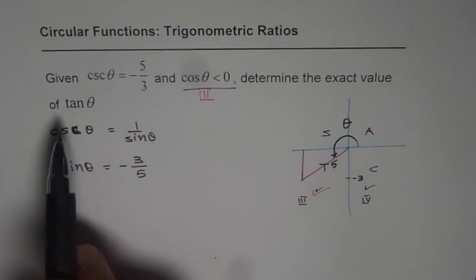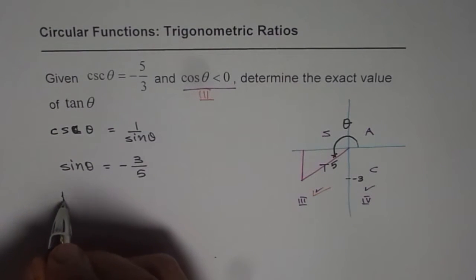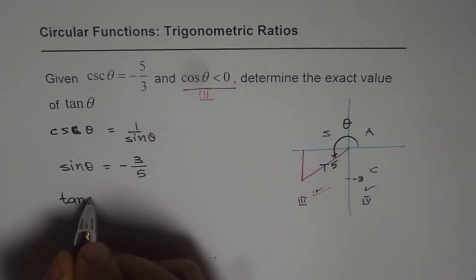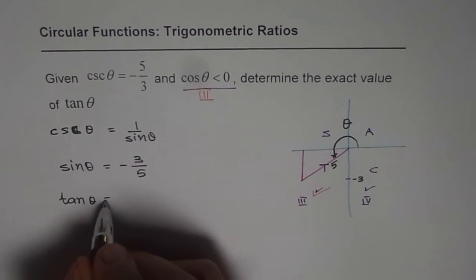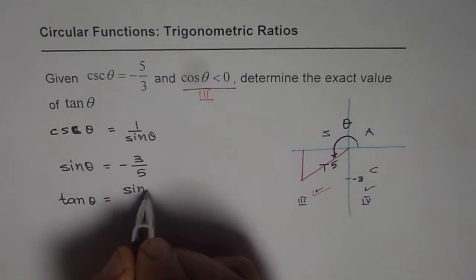Now, since we need to find the value of tan theta, what is tan theta equals to? We can find it in couple of ways. First is we can find theta and then find tan theta. The other way is tan theta is ratio of sin theta to cosine theta. So I will use this particular property.